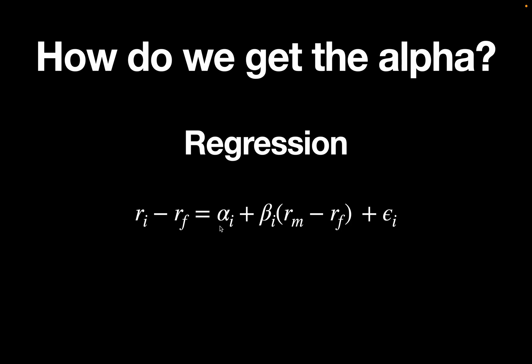So running a simple linear regression taking the dependent variable return minus risk free rate and the independent variable market return minus risk free rate, we will get both parameters. The alpha as the regression intercept and the beta as the regression coefficient.